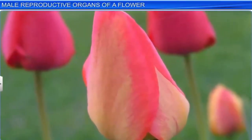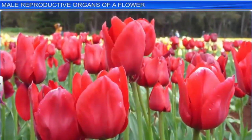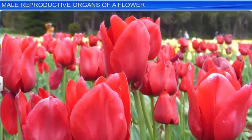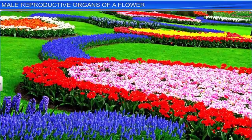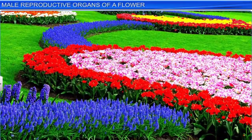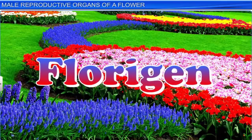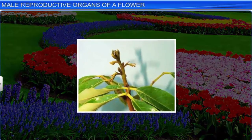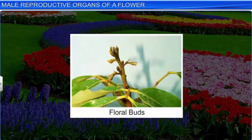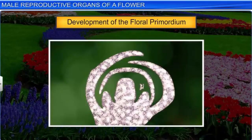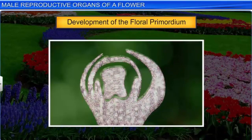Flowering is a major phase in the life cycle of a plant, and takes place when the climate is congenial for pollination and the formation of seeds. This phase is however preceded by several physiological and morphological changes, induced by hormones such as florigen, present in the leaves. These changes lead to the differentiation of vegetative buds into floral buds, and the development of the floral primordium — the rudimentary or preliminary stage of the flower or the flowering shoot.